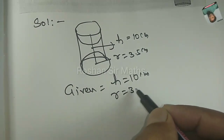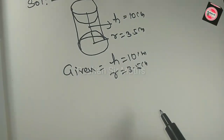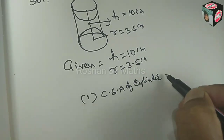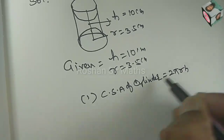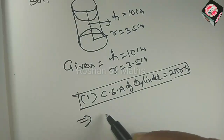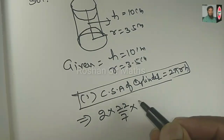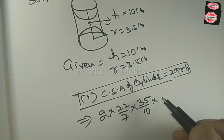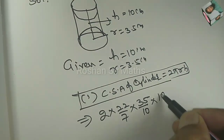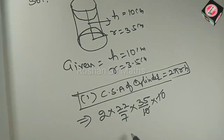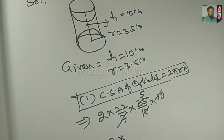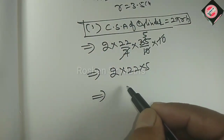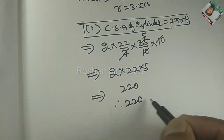Given: height h = 10 cm, R = 3.5 cm. First, we find the curved surface area of the cylinder using the formula 2πrh. Substituting: 2 into 22/7 into 35/10 into 10. After cancellation — 10 and 10 cancel, 7 cancels — we get 2 into 22 into 5 = 220 square cm.